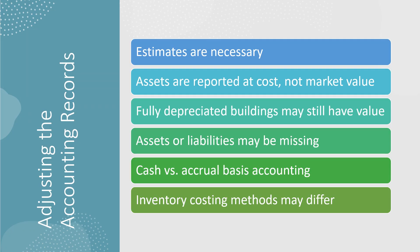Adjusting the accounting records requires estimates. Assets are reported at cost, not market value. Fully depreciated buildings may still have value. Assets or liabilities may be missing. You also need to consider whether it is a cash or accrual basis accounting, and note that inventory cost methods may differ.